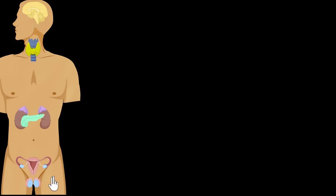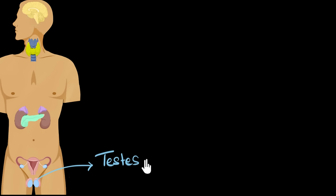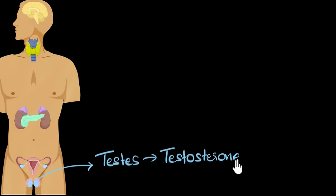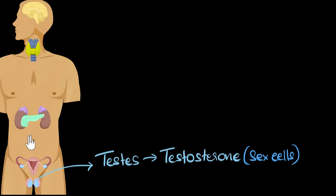Let's start from the bottom because I find them easier to remember. If you're a male, you will have testes. These are your endocrine glands because they secrete a hormone into the blood called testosterone. What does testosterone do? Its major job is in the development of the male sex cells — sperms. They also help in your sexual maturity, like the beard and mustache that you get, the chest hair — all of that is majorly due to testosterone in males.